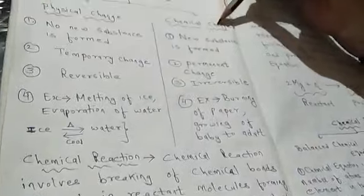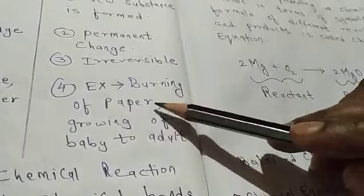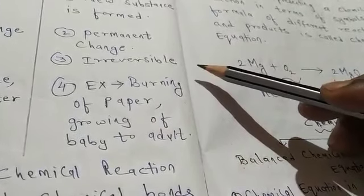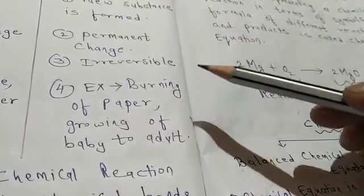Now, come to chemical change. For that, example, burning of paper. Paper on burning, change to ash. And some gases are evolved.